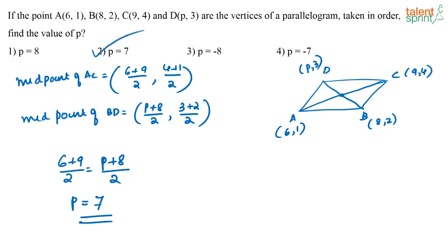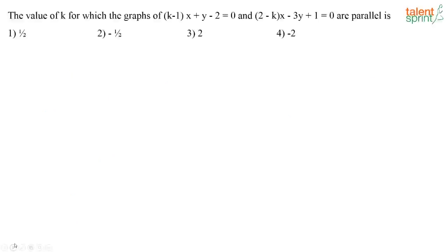So how did we solve this? The diagonals of a parallelogram bisect each other, so the coordinates of the midpoint of AC will be equal to the coordinates of the midpoint of BD.